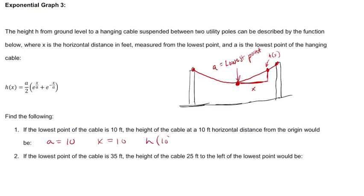So we find h of 10, which is equal to a over 2 or 5 times e to the power of 10 over 10, which is x over a, 10 over 10, which is 1, plus e to the negative x over a, which is negative 10 over 10. And that's our equation. That's what we're working with.